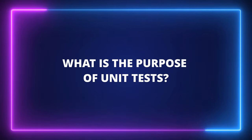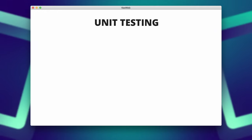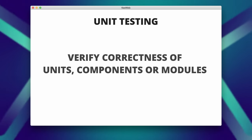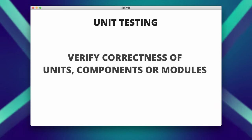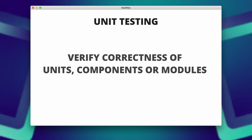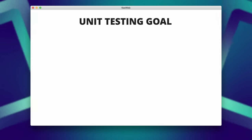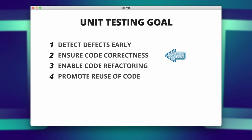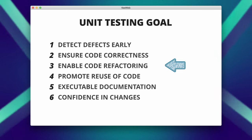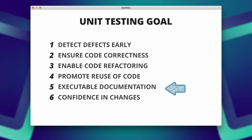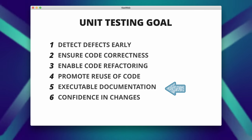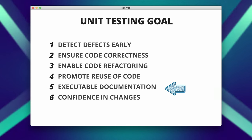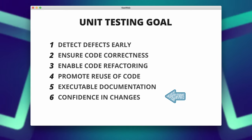What is the purpose of unit tests and what are the advantages? The purpose of unit tests is to verify the correctness of individual units, components, or modules of software code. Unit tests focus on a small, isolated piece of code, such as a function or method, and check if they behave as expected under various conditions. The primary goals are detecting defects early, ensuring code correctness, enabling code refactoring and maintenance, and promoting modular and reusable code. Unit tests also serve as executable documentation, describing how a particular unit of code works and providing examples of its usage. Having unit tests boosts confidence in code changes.